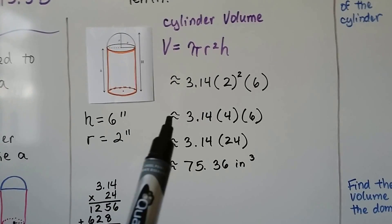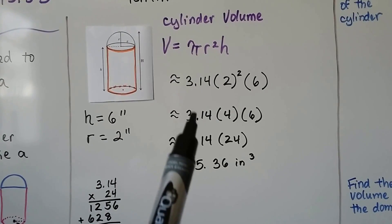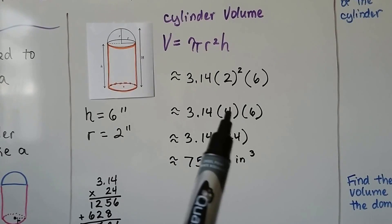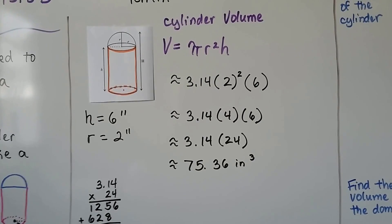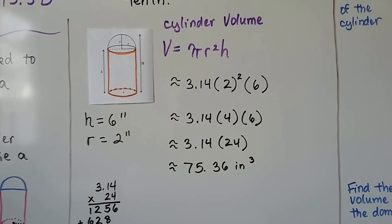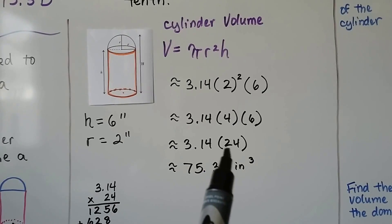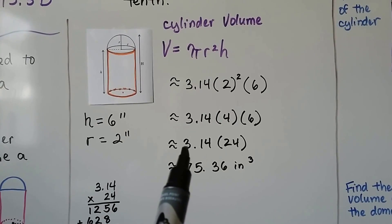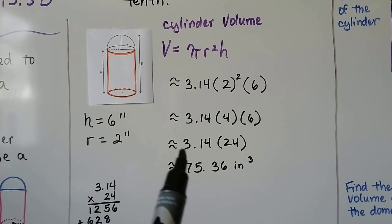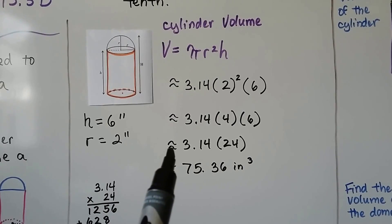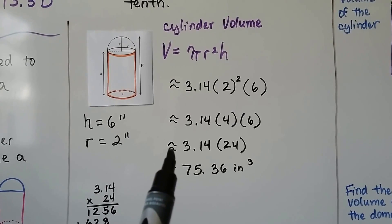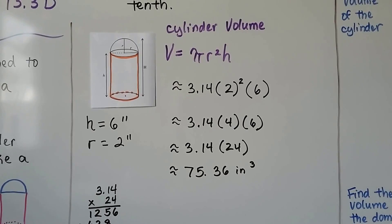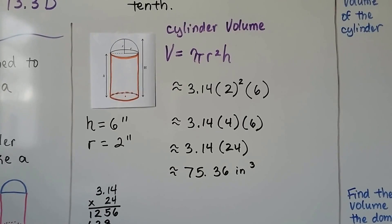We can multiply in any order — we can do the 3.14 times the 4, or we could do the 4 times the 6. It doesn't matter; it's all going to equal the same thing in the end. 4 times 6 is 24. When we multiply that by our value for pi, it's going to be an approximation because we're not multiplying by all the digits of pi, and we get 75.36 inches cubed.